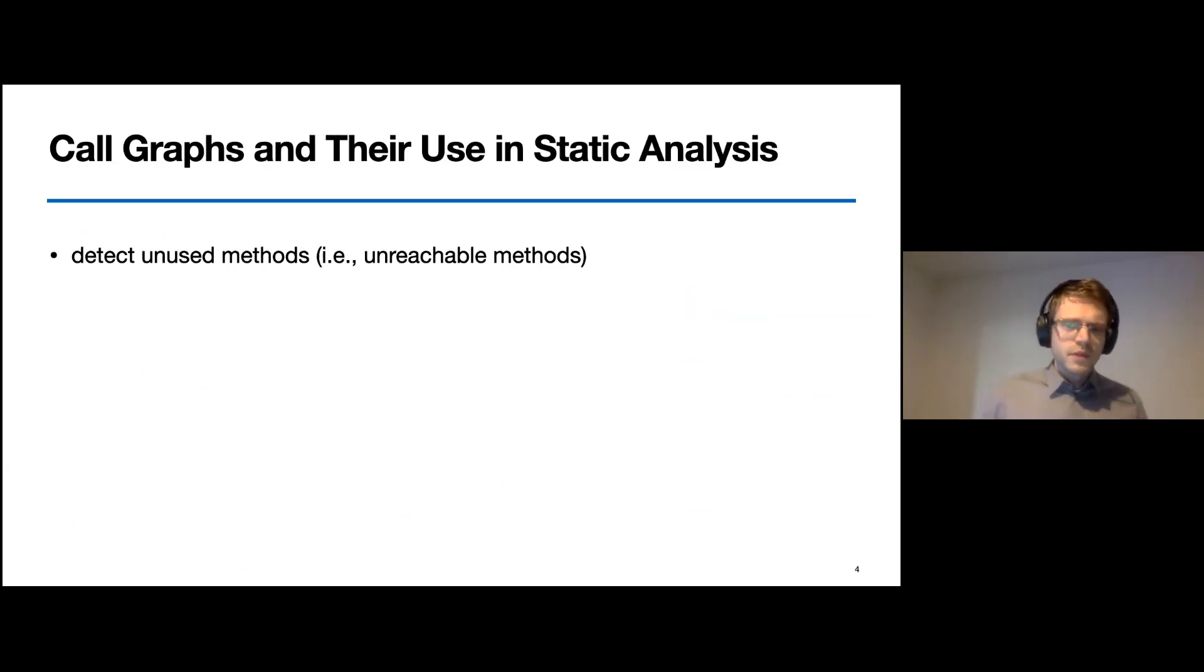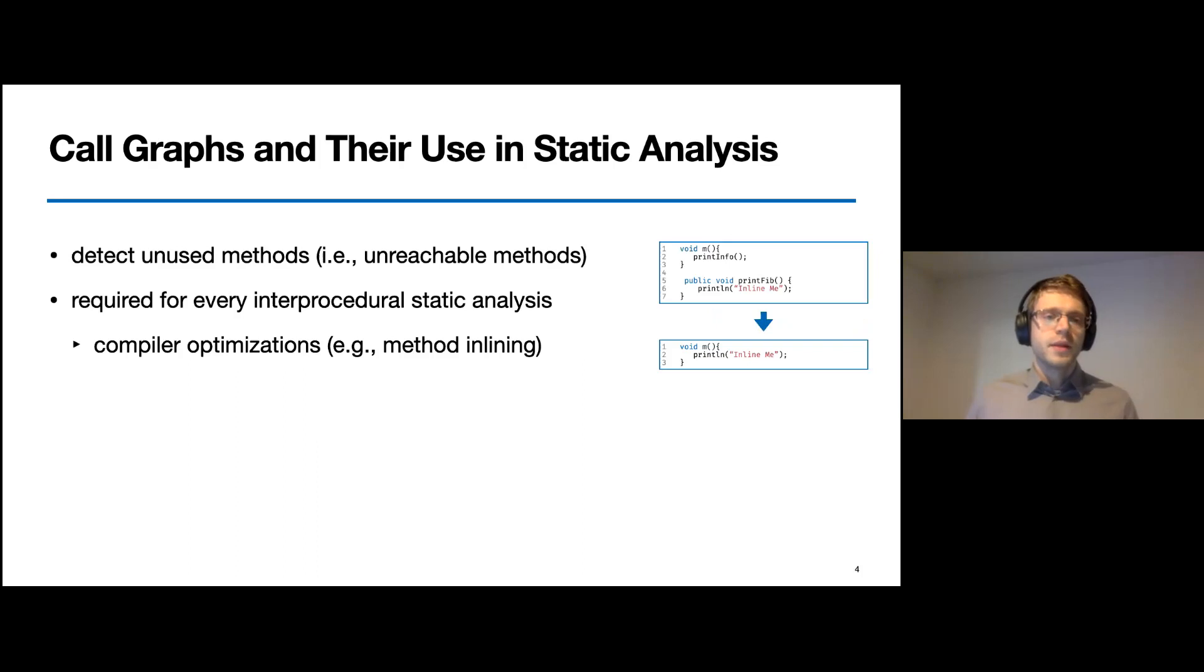Besides, call graphs are required for every single interprocedural static analysis, which are analyses that require information from either calling or called methods. For example, optimizing compilers use them to perform method inlining. But they are also used and required in general dataflow analysis, for example, when we want to track values throughout the program across the boundaries of methods.